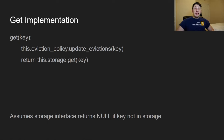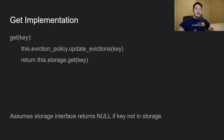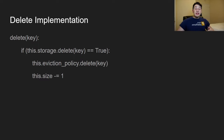Let's look at implementations for those methods. For get: given a key, get the corresponding value. We call our eviction policy to update evictions according to the key, because for certain eviction policies — like least recently used — it's important to account for when you're accessing a key. Then we go into our underlying storage and call the storage's get method for that key.